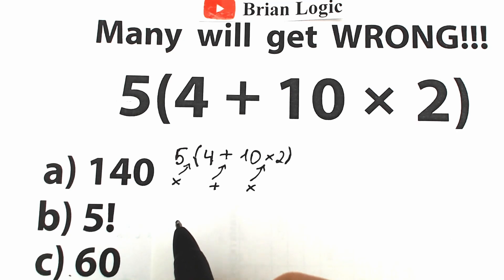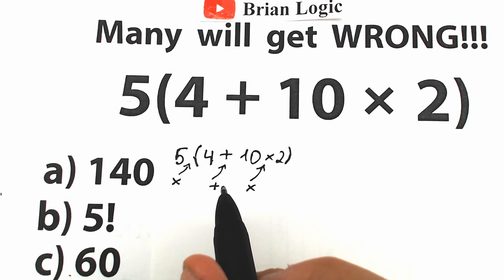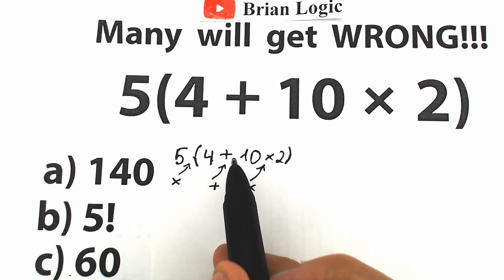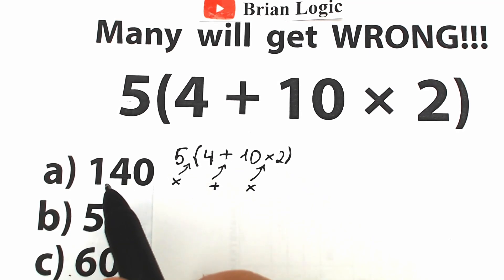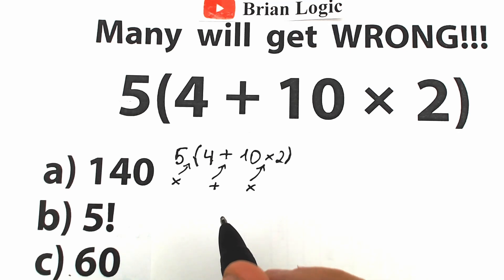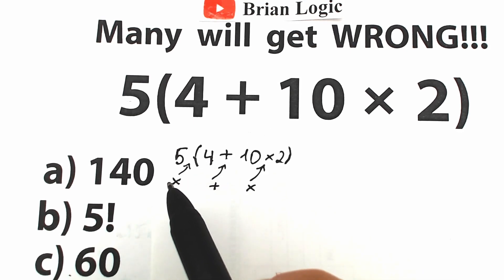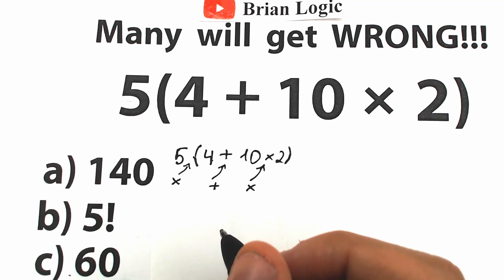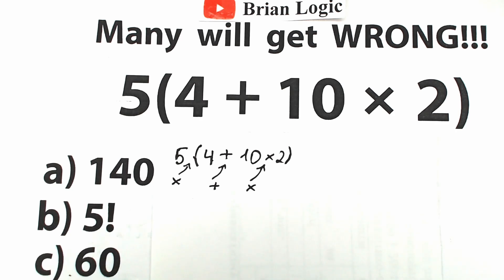Now the main point: what is the correct order to solve this problem? For example, we could add 4 plus 10, get 14 times 2, get 28, then 28 times 5 equals 140. Or we could start with the multiplication and get a completely different answer — and this turns into a big argument. A lot of students argue with each other about the correct order. In this video I'm going to show you the correct order of operations.